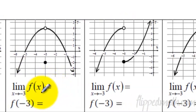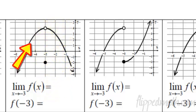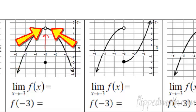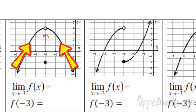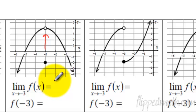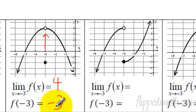The limit as x approaches negative 3 on this next example: on the left side of the graph we're going up towards here, approaching where the graph is at negative 3, and on the right side we're also approaching up here. So both sides are going to the same place — it is still a y value of 4. But this time, the actual value of the graph is down here at negative 2. So the limit was up here at 4, and the y value of the graph is at negative 2. They're not the same thing in this case.